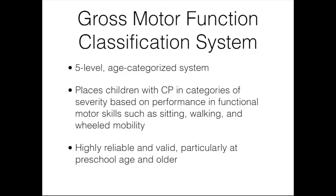There are four age bands: birth to 2, 2 to 4, 4 to 6, 6 to 12, and 12 to 18. Based on the child's performance in functional skills and their age, they're classified into one of the five levels. Research has shown that the GMFCS is highly reliable and valid, and stable over time — once children are classified, they typically don't change levels. This is particularly true at preschool age and older; the birth to 2 age band may be a little less reliable.